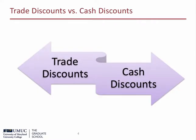Trade discounts are used to entice buyers to purchase more inventory with each purchase. Therefore, trade discounts mainly benefit large volume accounts. The seller assigns multiple prices to the same product, whereby lower prices are assigned to larger volumes of the same item or service. It is important to note that trade discounts are not recorded in the accounting records.